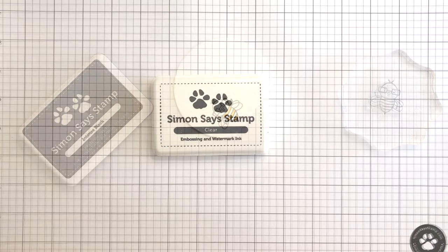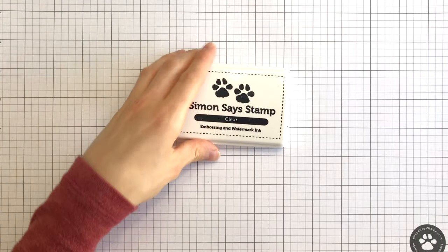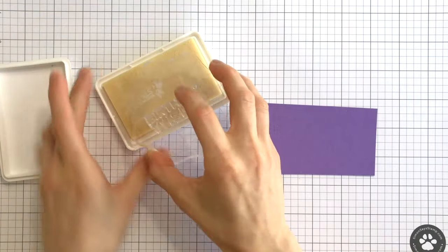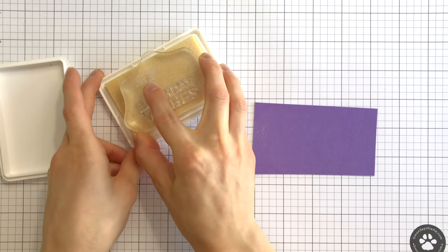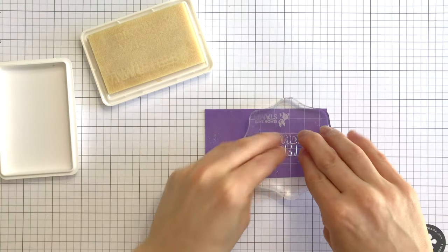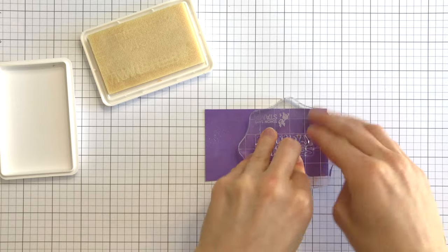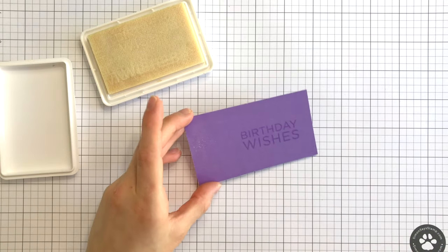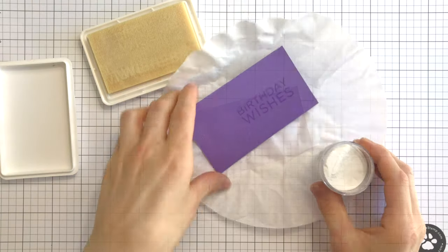An embossing ink is a true must-have for any project. Whether you use it as a watermark ink for subtle stamping, or as a sticky ink for heat embossing, you'll reach for our Simon Exclusive Embossing Ink Pad all the time. The ink dries slowly, ensuring that you'll have plenty of time to add embossing powder and set it with a heat tool.